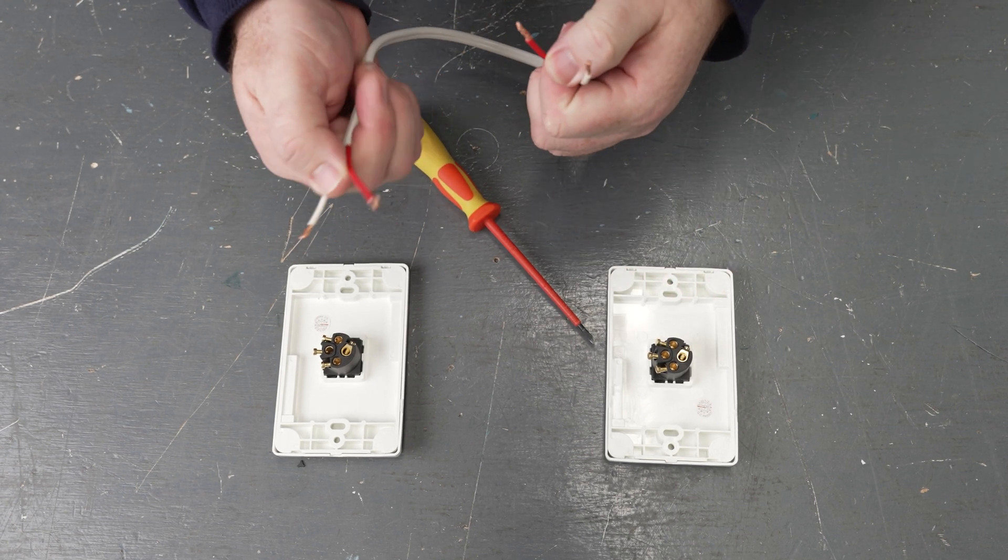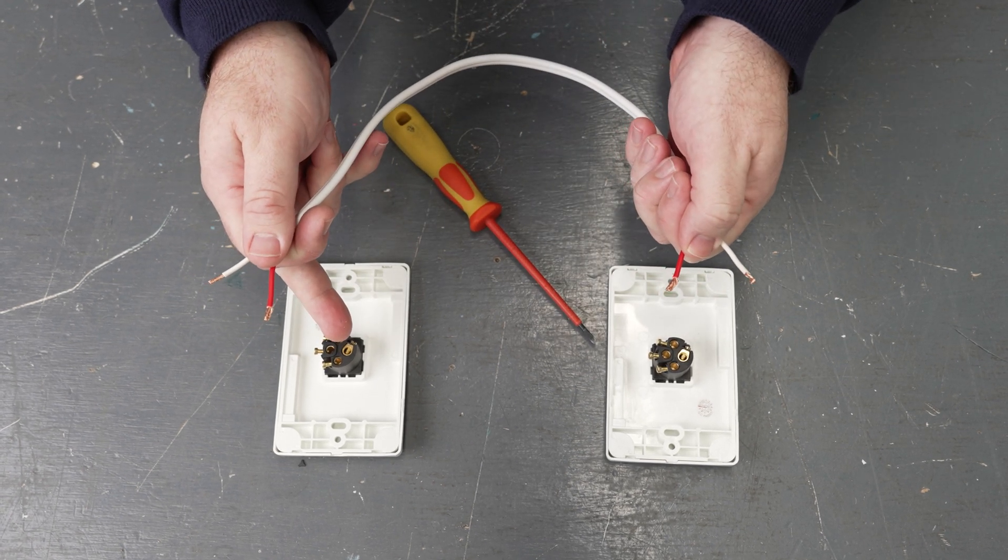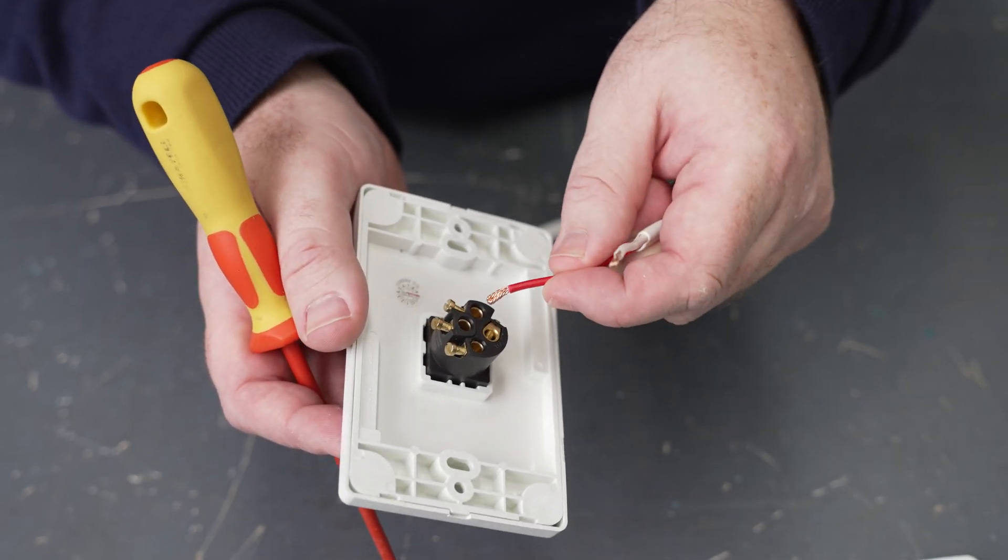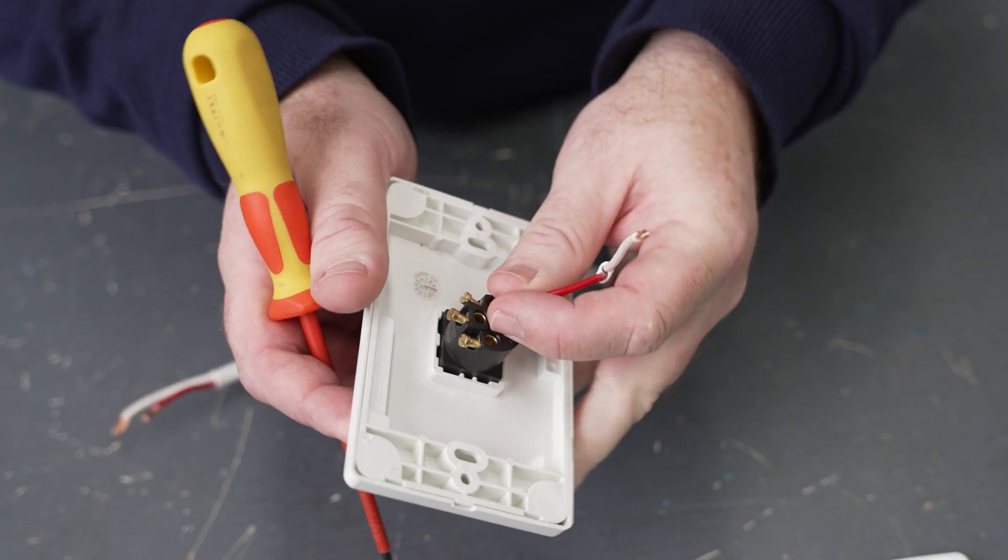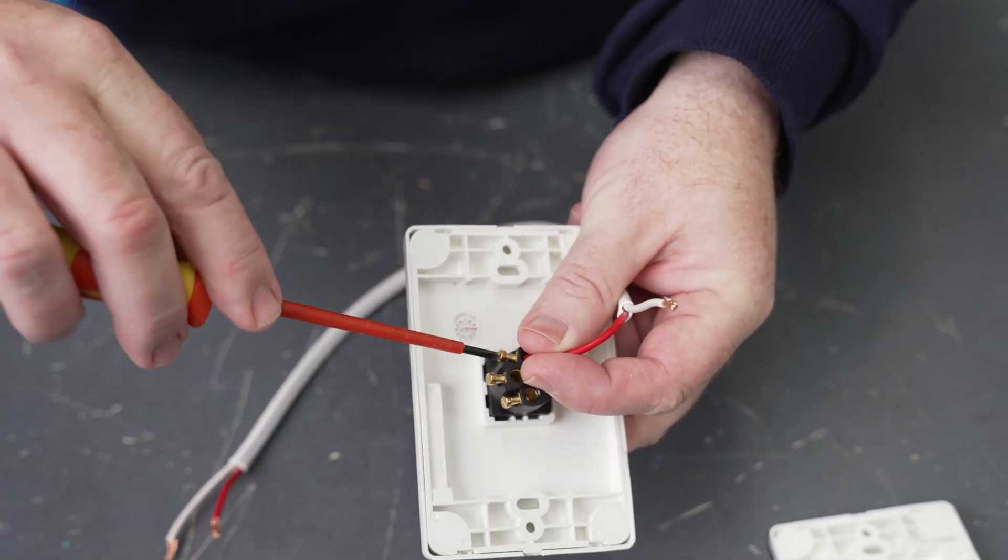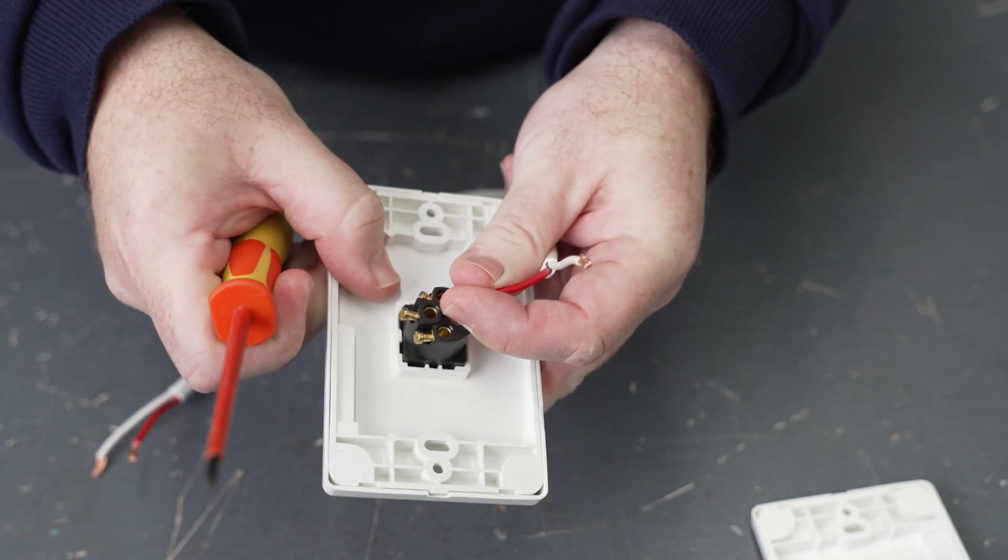We'll do the same for the white conductor, but putting it into the number two terminal. Watch as we do it. Taking the red conductor out of the twin active, we put it into the number one terminal. Take your screwdriver and tighten it up. Once it's tight, check.